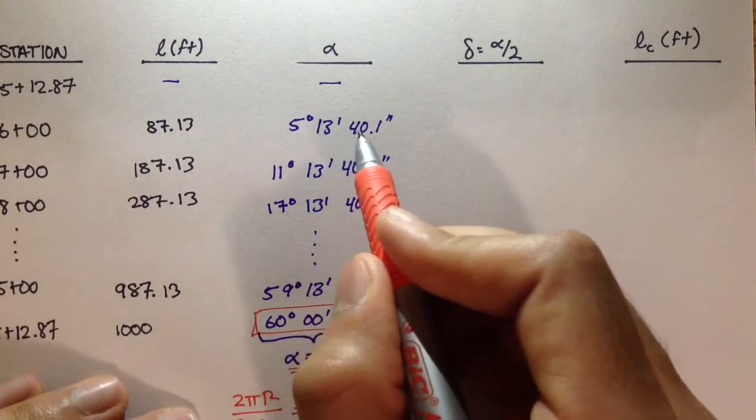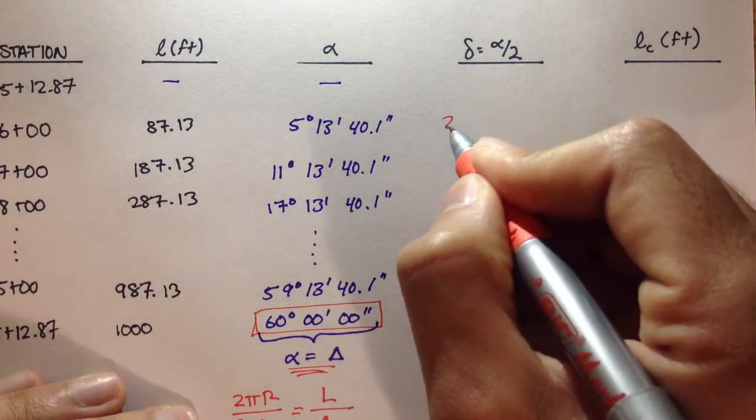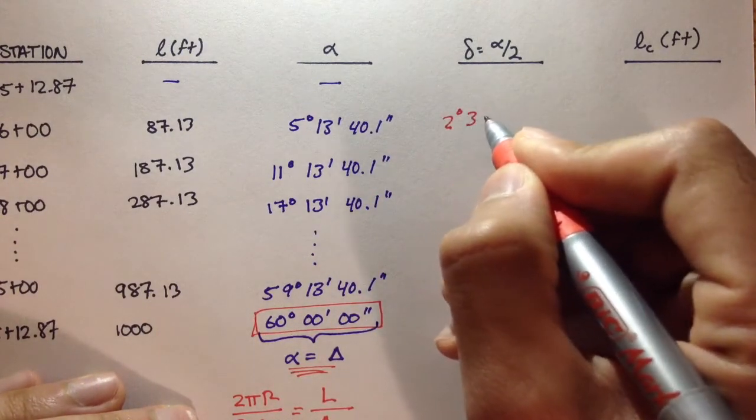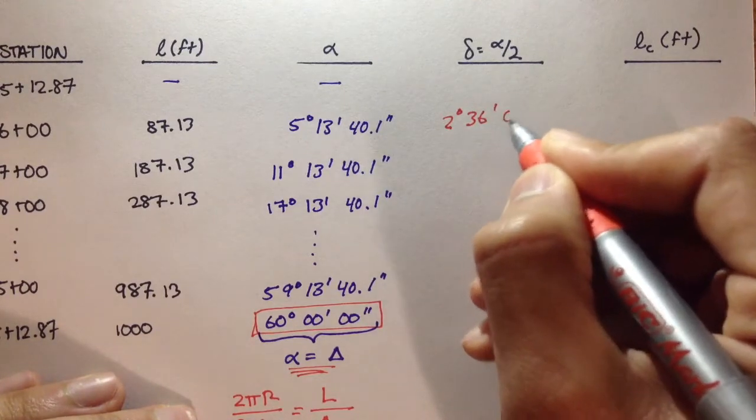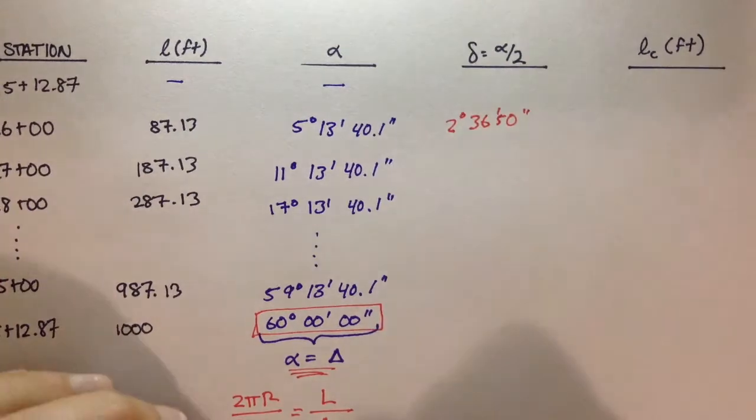We divide 5 degrees, 13 minutes, 40.1 seconds by 2. And you should get something like 2 degrees, 36 minutes, and 50 seconds.